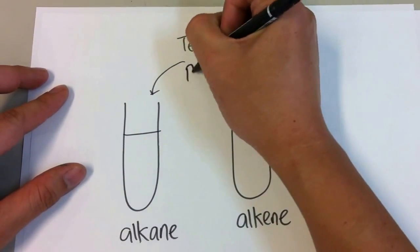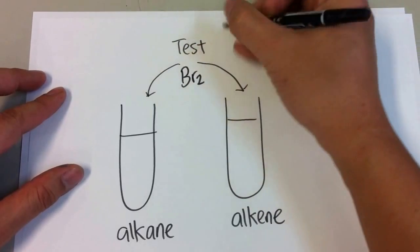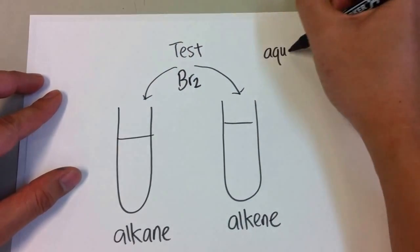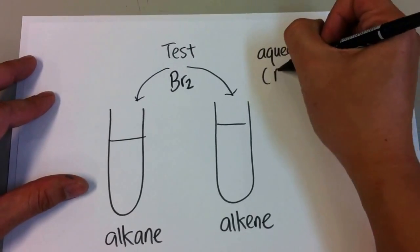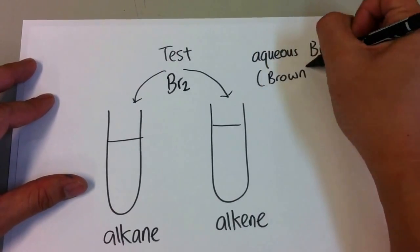So what you can add is something known as aqueous bromine, aqueous Br2. Now, aqueous bromine's original color is brown.